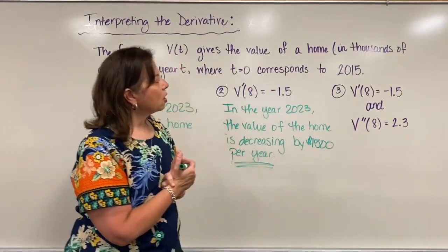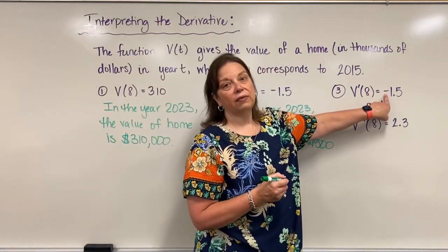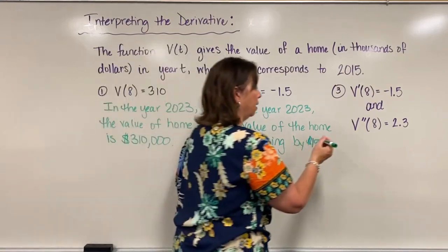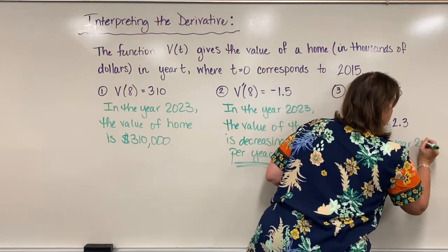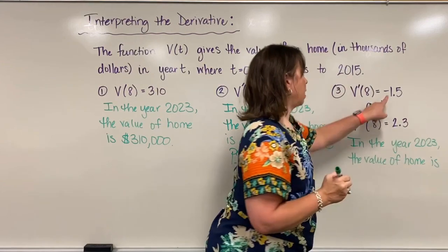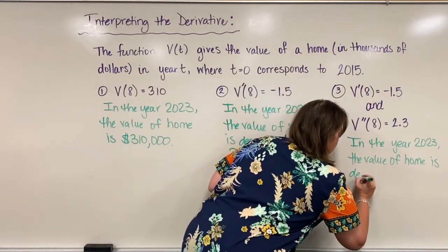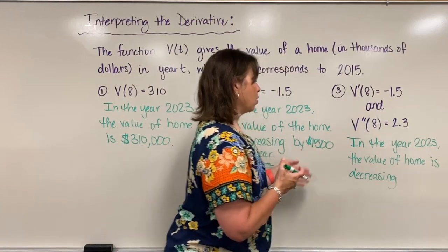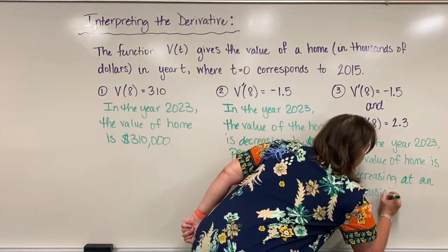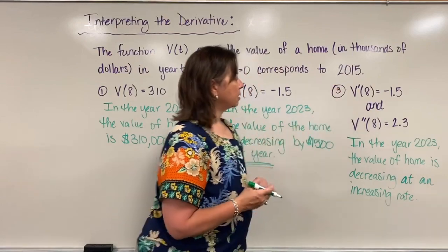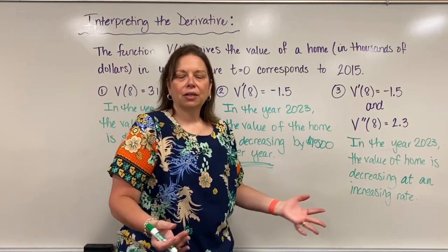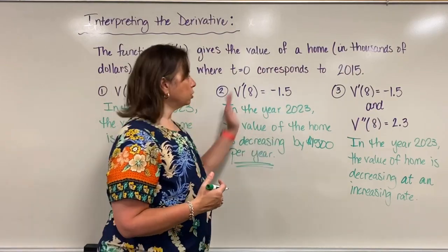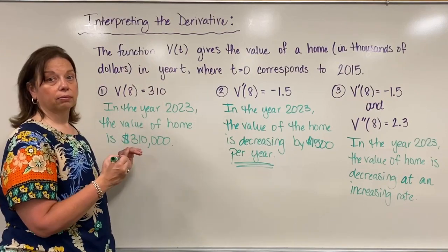When we see statements like this, we describe them this way. Because the first derivative is negative, the value of the home in 2023 is declining. But because the second derivative is positive, we say the value of the home is decreasing at an increasing rate. When we see this kind of double notation, we describe it as increasing at an increasing rate, or in this case decreasing at an increasing rate, because we are figuring out how fast the change itself is occurring — whether the value is going up or down based on the notation given.